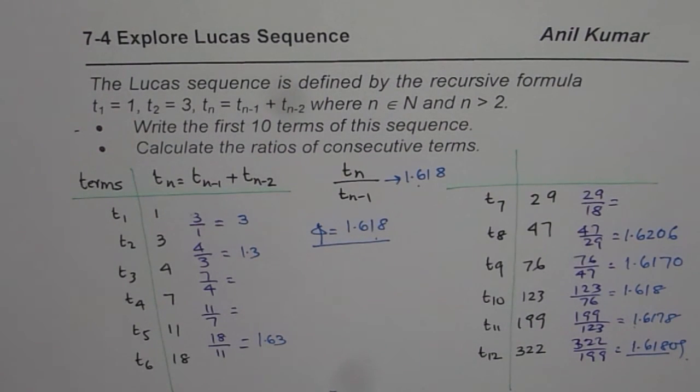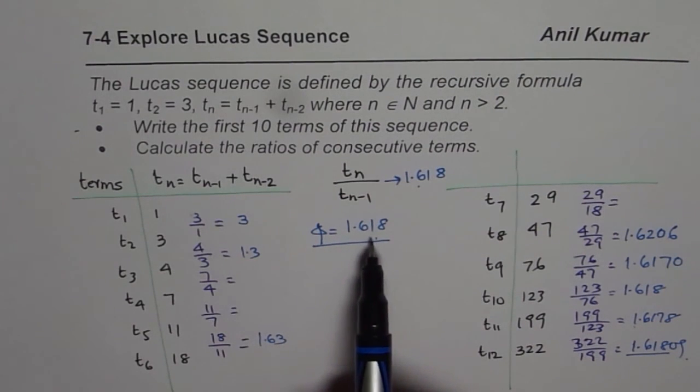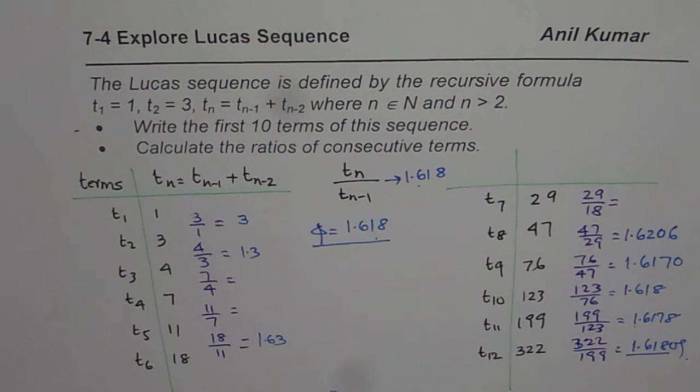So, what we notice from here, that the ratio of consecutive terms for these series is kind of same, 1.618 to the third place. So, that is a good, interesting observation. I hope that helps. Thank you.